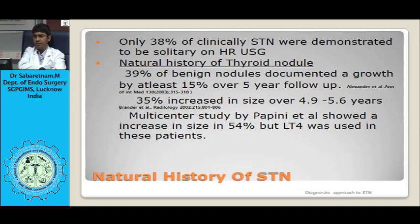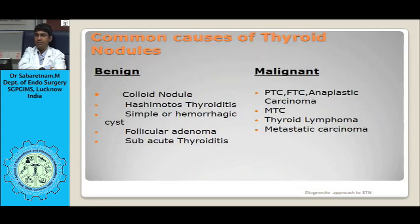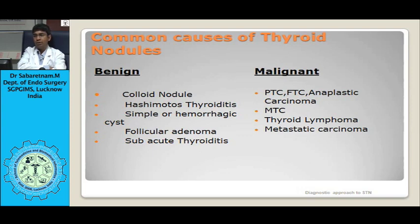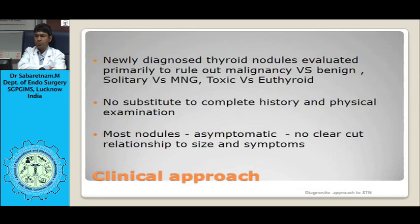Common benign causes of thyroid nodules include colloid nodule, Hashimoto's thyroiditis, simple or hemorrhagic cyst, follicular adenoma, and subacute thyroiditis. Malignant causes include papillary thyroid carcinoma, follicular thyroid carcinoma, anaplastic carcinoma, medullary thyroid carcinoma, thyroid lymphoma, and metastatic carcinoma. The main aim in approaching these nodules is to rule out malignancy, determine whether it is truly solitary or a dominant nodule of a multinodular goiter, and assess thyroid function status.